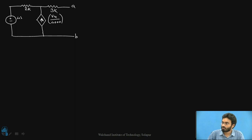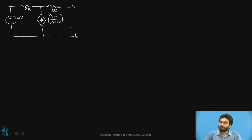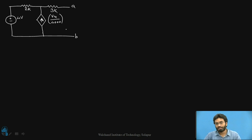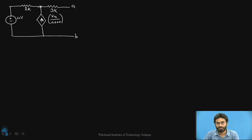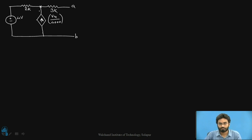Let's consider this circuit and identify the Thevenin's equivalent circuit since it has both dependent and independent sources. Students can pause this video and identify how they would solve this problem - whether applying KCL or KVL would be easier. Applying KCL across this particular node called X would be the better choice, because whenever we are dealing with dependent sources it's always a good approach to use KCL when you have nodes like this.